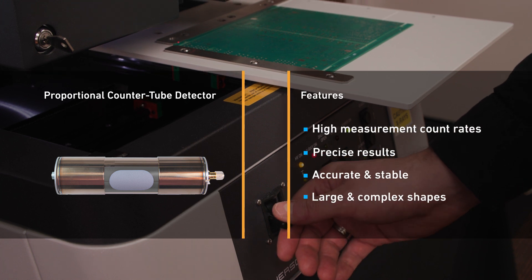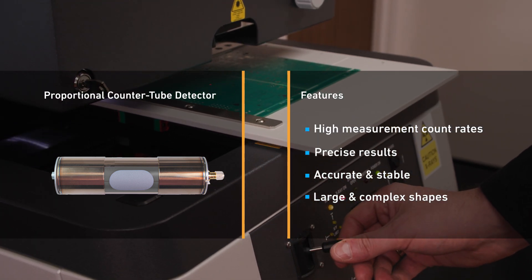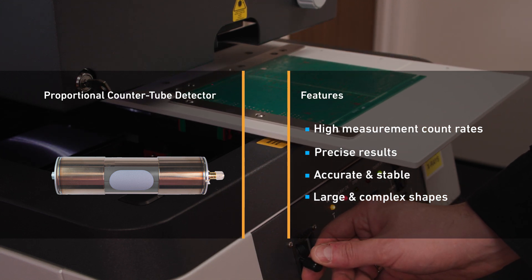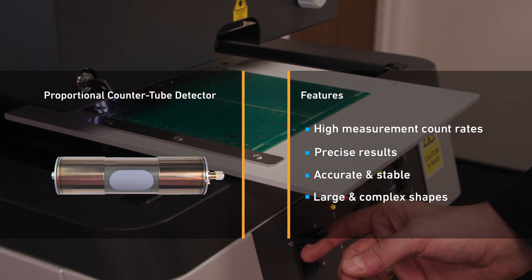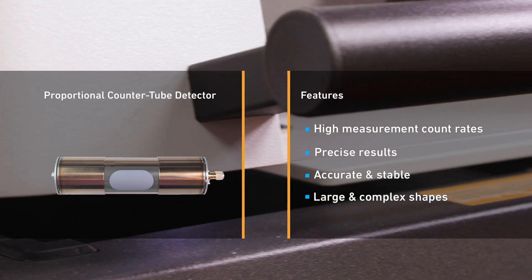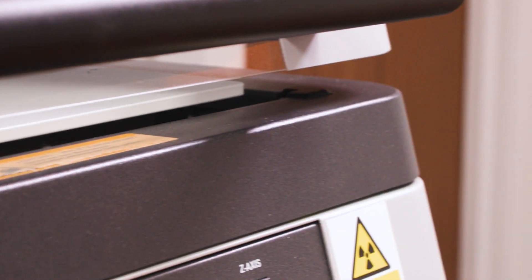The XDL instrument range benefits from a proportional countertube detector with a large X-ray capture area producing high X-ray spectrum count rates and excellent precision, even at long measuring distances. This type of detector can be distant from the measured surface to accommodate large or complex shapes, which is a significant advantage over silicon-based detectors that must be close to the measured sample to be effective.